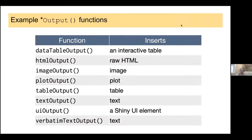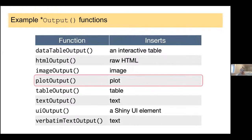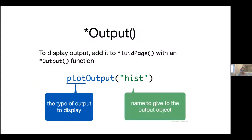That comes with the output functions. What output functions you use depends on what sort of output you want. If you want an interactive data table, use that one. If you want text output, use text output. Since we're making histograms today, we're going to use the plotOutput function. All of these output functions are pretty similar — you're going to add it to fluidPage just like the input function. All you're going to do is put the name of what you want the object to be named. We're going to add a plot called 'hist' to our output function.